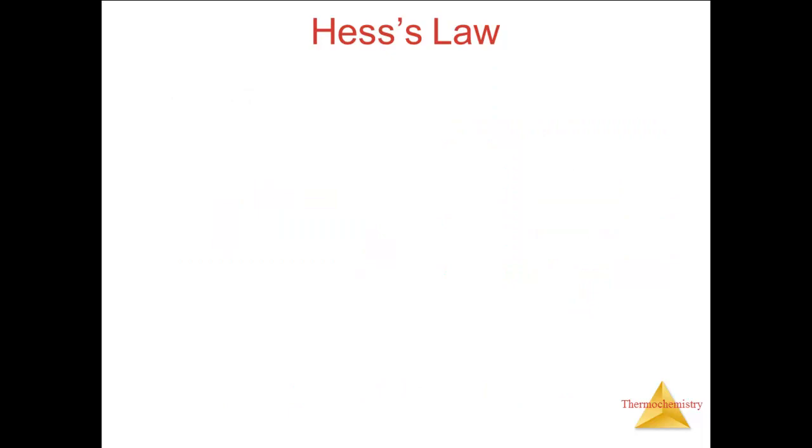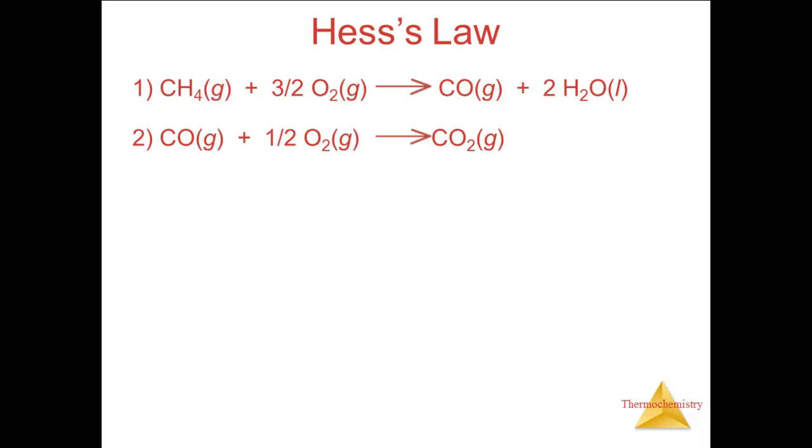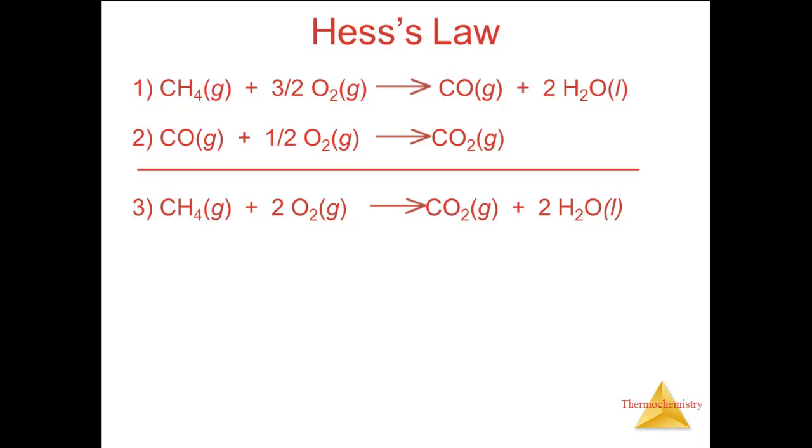Here are the two reactions. CH4 gas plus one half O2 gas gives CO gas plus two H2O liquid. CO gas plus one half O2 gas gives CO2 gas. These add to give CH4 gas plus O2 gas gives CO2 gas plus two H2O liquid. So delta H for reaction three, the sum, equals delta H for reaction one plus delta H for reaction two. We know the delta H values for the two reactions given, minus 607 kilojoules and minus 283 kilojoules respectively. So delta H for the third is the sum of the two delta H values, which is minus 890 kilojoules.